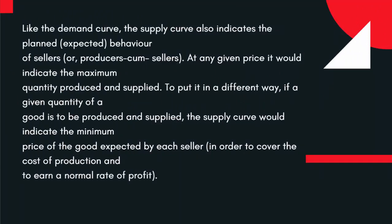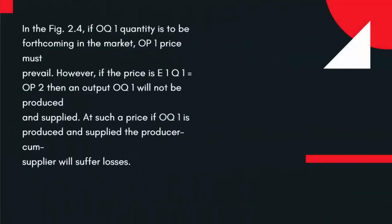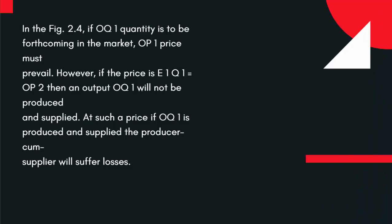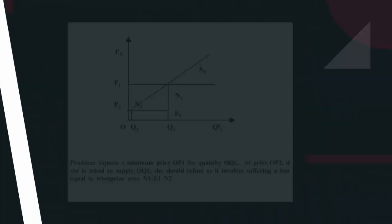To put it in a different way, if a given quantity of a good is to be produced and supplied, the Supply Curve would indicate the minimum price of the good expected by each seller, in order to cover the cost of production and to earn a normal rate of profit. In Figure 2.4, if OC1 quantity is to be forthcoming in the market, OC1 price must prevail. However, if the price is E1Q1 equals OC2, then an output OC1 will not be produced and supplied. At such a price, if OC1 is produced and supplied, the producer-cum-supplier will suffer losses.